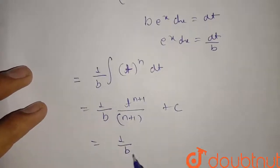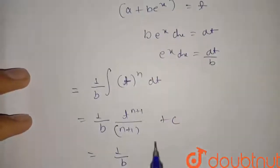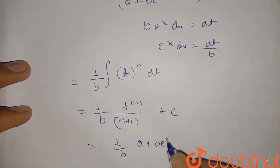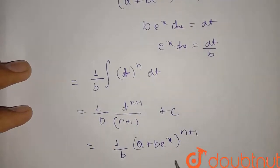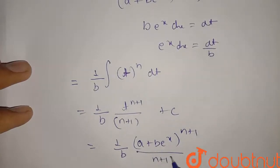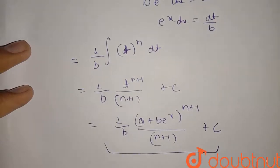So now I am substituting value of t again. So final answer will be 1 upon b and value of t is a plus b e raised to x. So it will be a plus b e raised to x whole raised to n plus 1 upon n plus 1 plus c. This is our final answer of the integration.